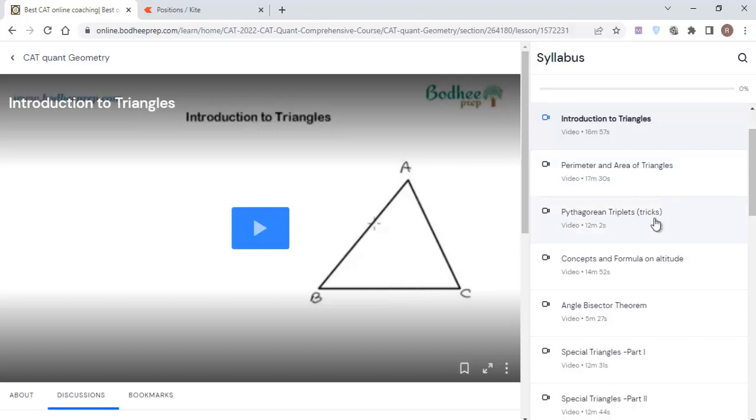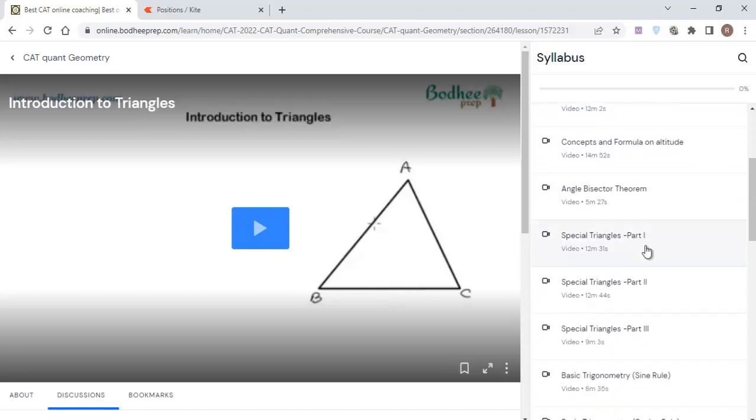There is a trick to generate the Pythagorean triplet. You don't have to learn it—if you just understand how the trick works, you'll be able to generate all the Pythagorean triplets which exist. Then the concept and formula for altitude and angle bisector.